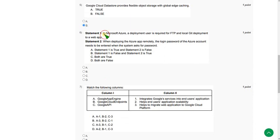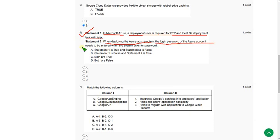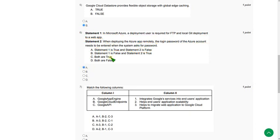For the sixth question there are two statements. Statement 1: in Microsoft Azure, a deployment user is required for FTP and local Git deployment to a web app — this is true. Statement 2: when deploying the Azure app remotely, the login password of the Azure account needs to be entered — this is wrong, because you should use the deployment password, not the portal login password. So the answer is option A: statement 1 is true and statement 2 is false.